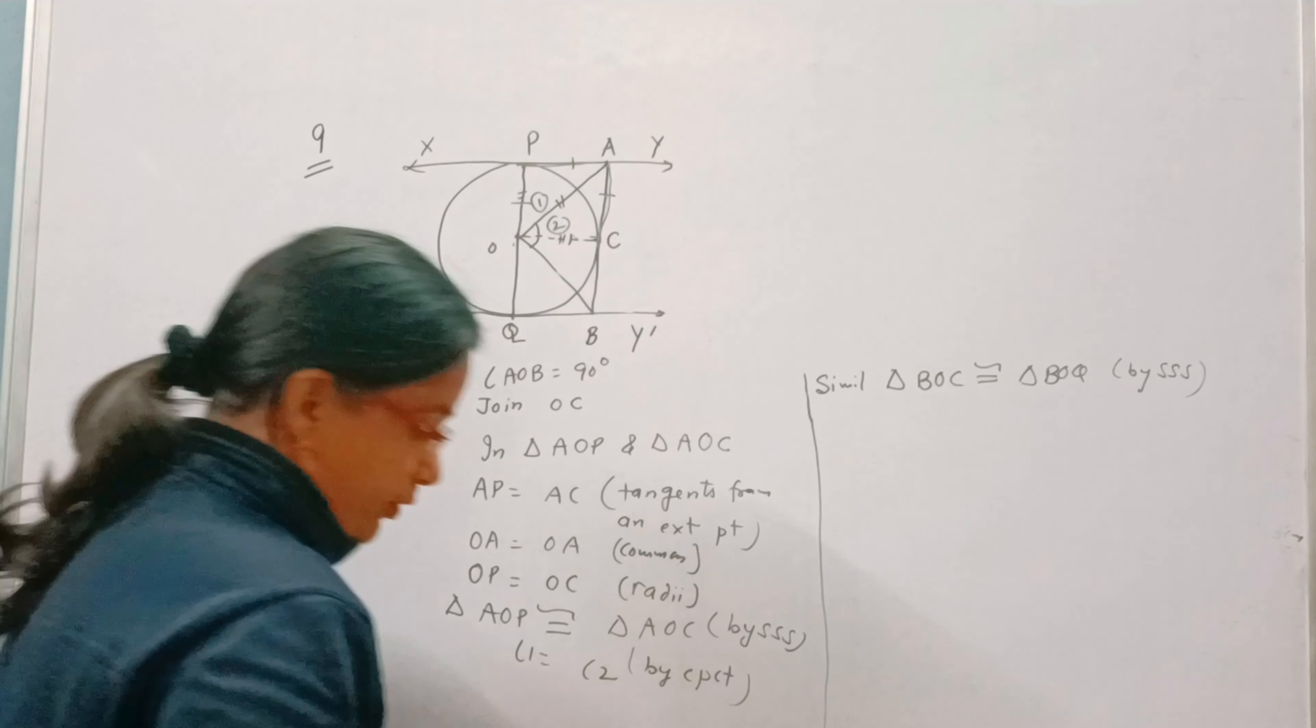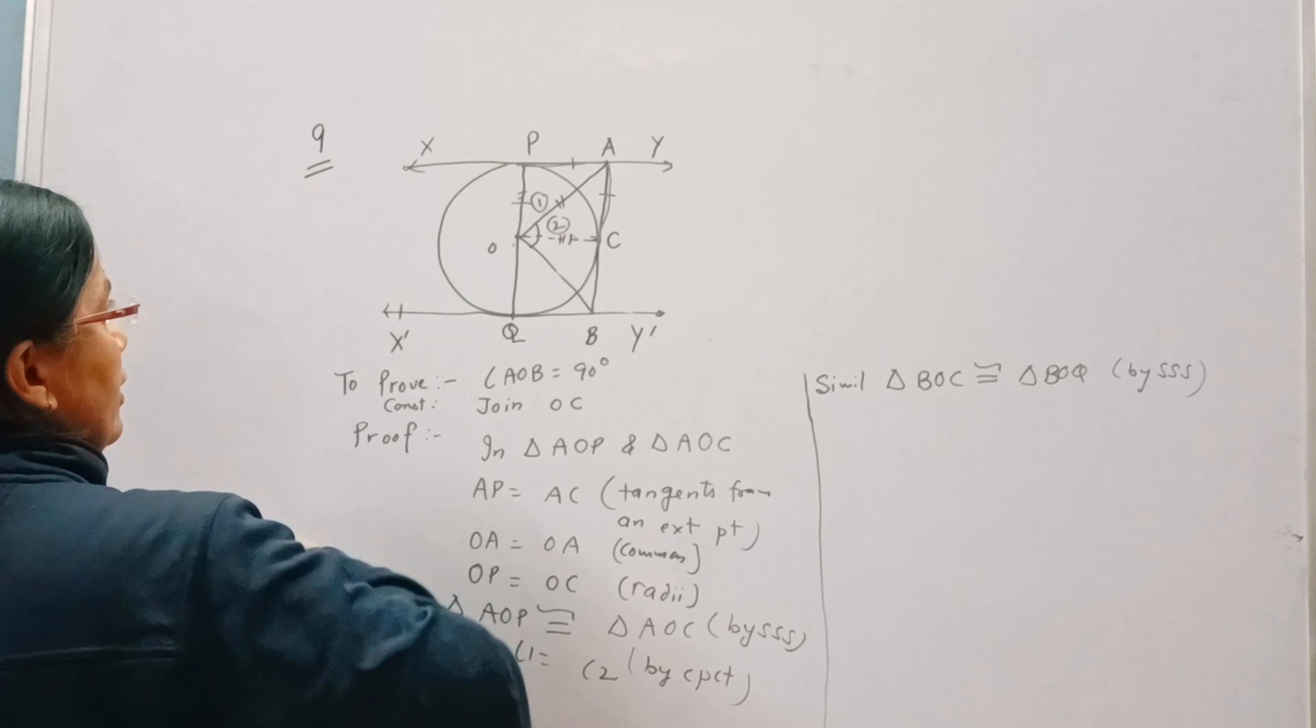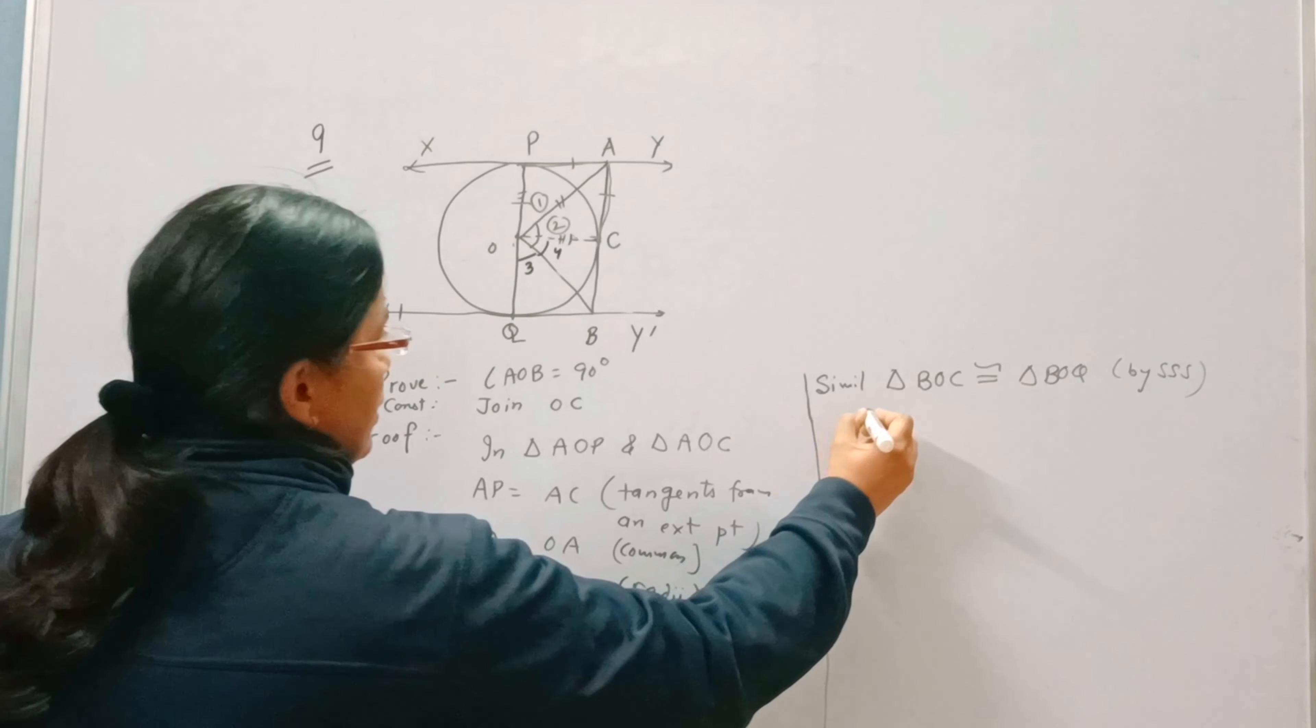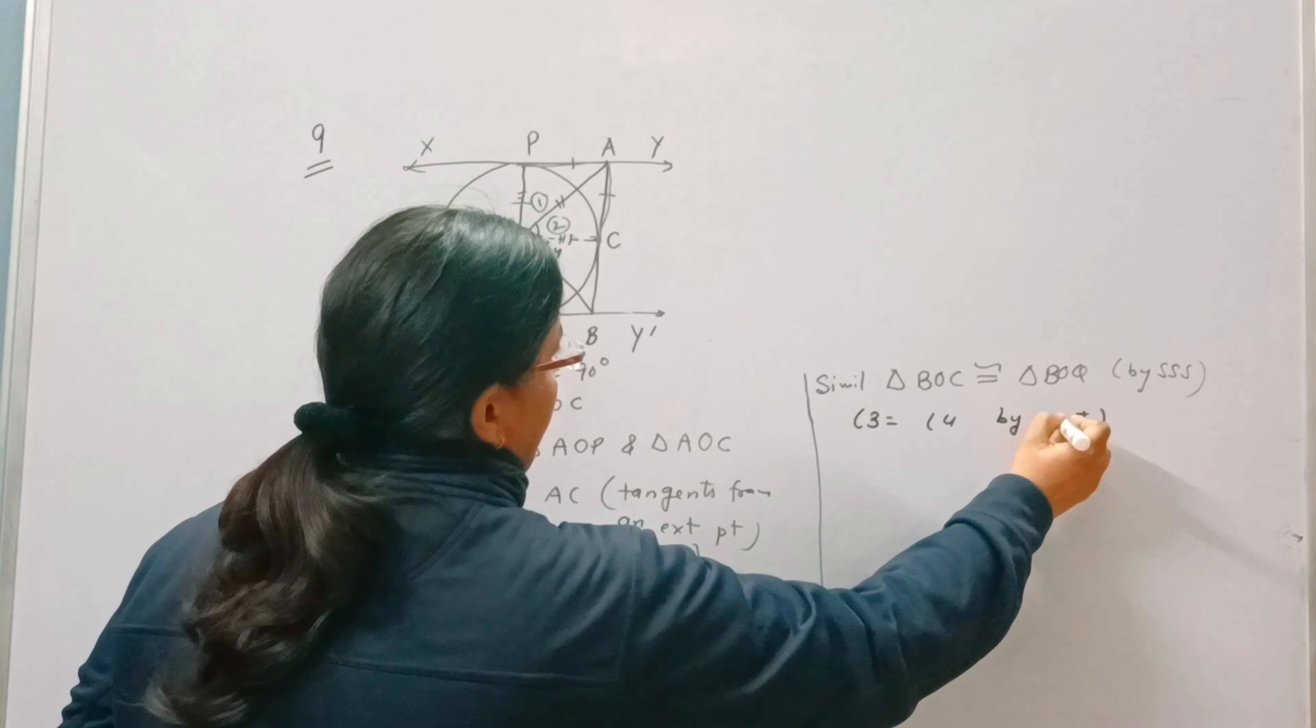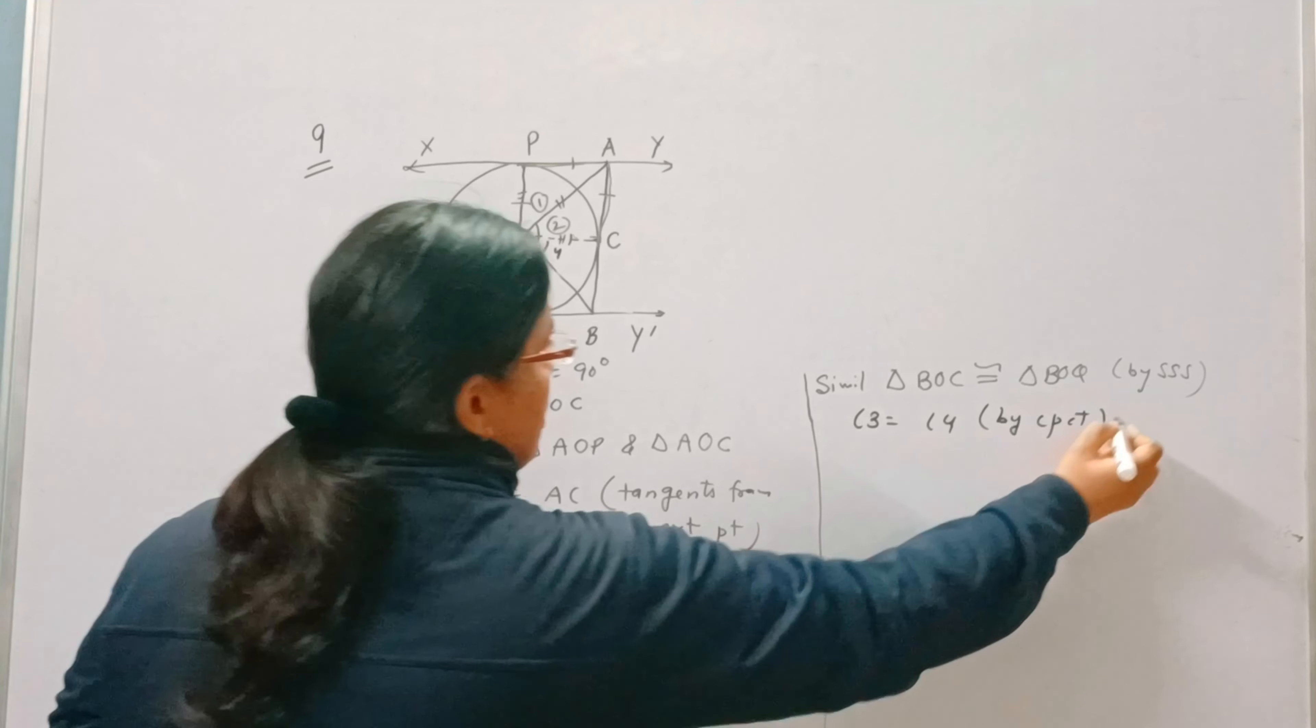And if these two triangles are congruent then we can write angle 3 is equal to angle 4 by cpct. Now this is equation 1, this is equation 2.